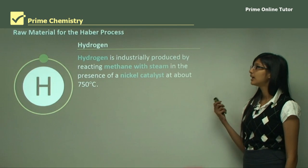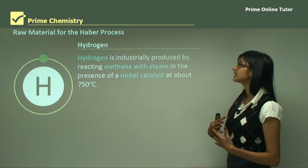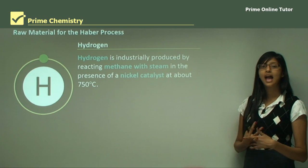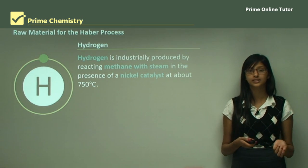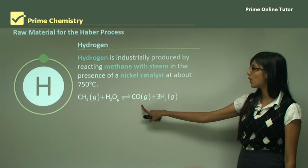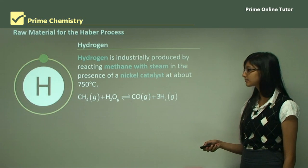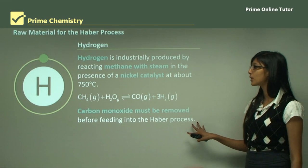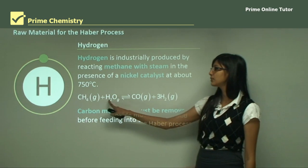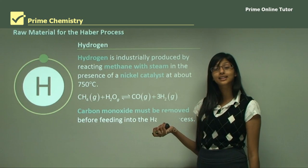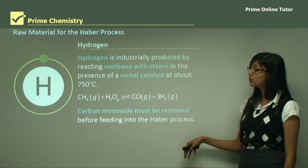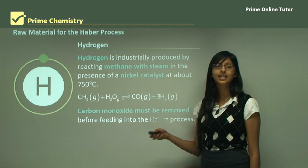Hydrogen is industrially produced by reacting methane with steam in the presence of a nickel catalyst at about 750 degrees Celsius. The reaction is: methane gas reacts with water vapor to form carbon monoxide and hydrogen. Carbon monoxide must be removed before feeding the hydrogen into the Haber process, because carbon monoxide can act as a poison and destroy the catalyst.